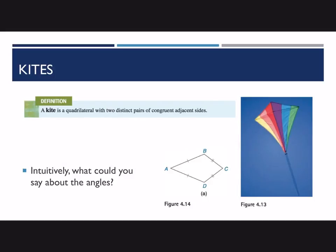A kite is a quadrilateral with two distinct pairs of congruent adjacent sides. Here's a picture on the right, and you can see the geometric kite is pretty much the same as what you'd expect from picturing the toy kite. By distinct pairs of congruent adjacent sides, we mean they are not all the same length. So we have two pairs: AB and AD are the same length, and BC and CD are the same length, but AB would be a different length than BC.